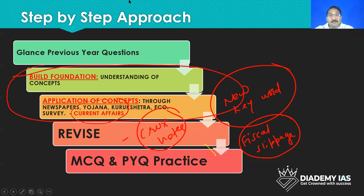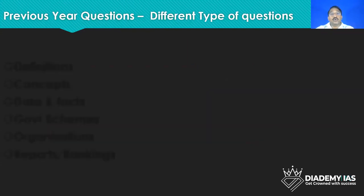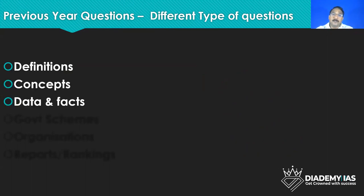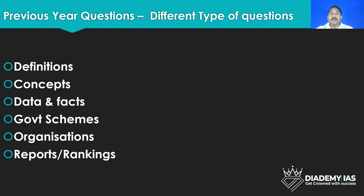Now we will come to the real thing — we will see the previous questions and the pattern of the previous questions. In the previous questions there are various categories: some questions based upon definition, questions based upon concept, upon data and facts, government schemes, organizations, and report rankings. These are five to six categories where questions are being asked.